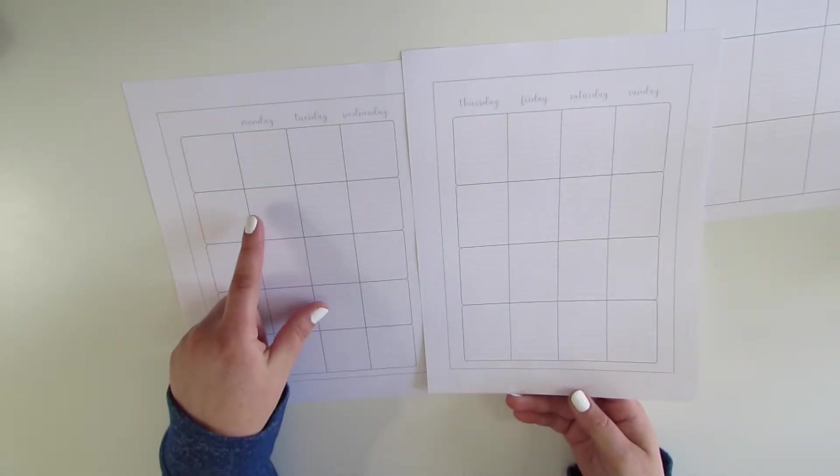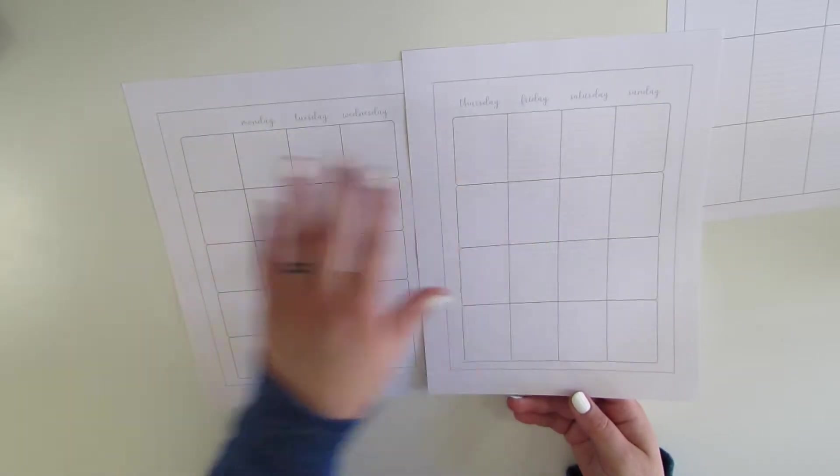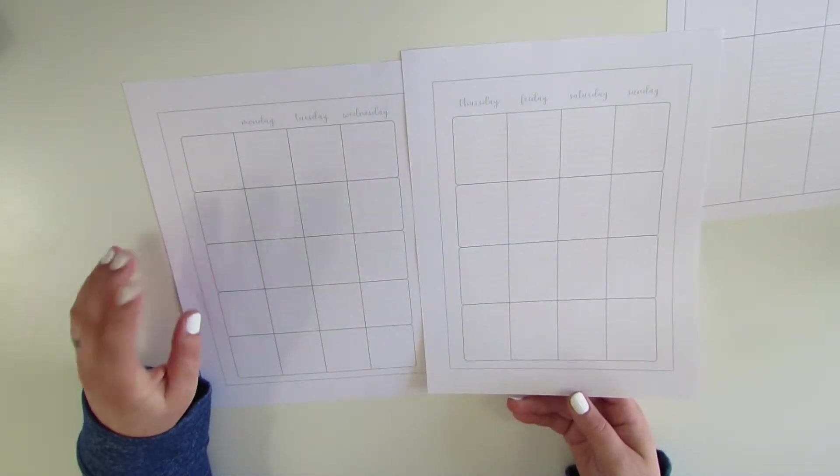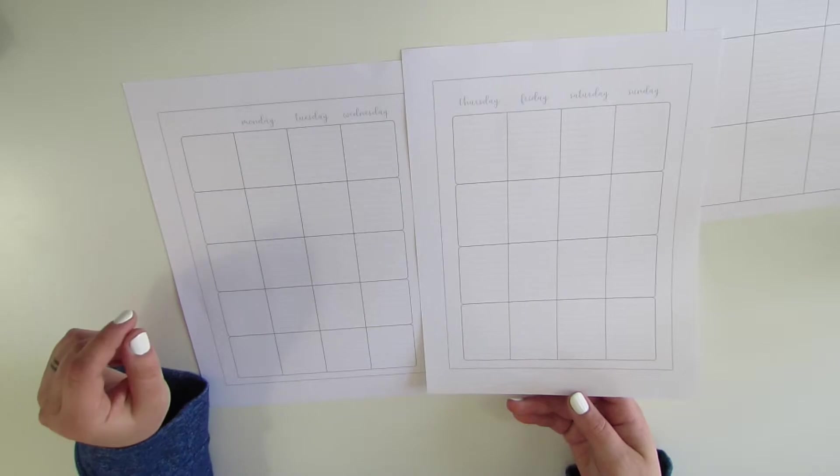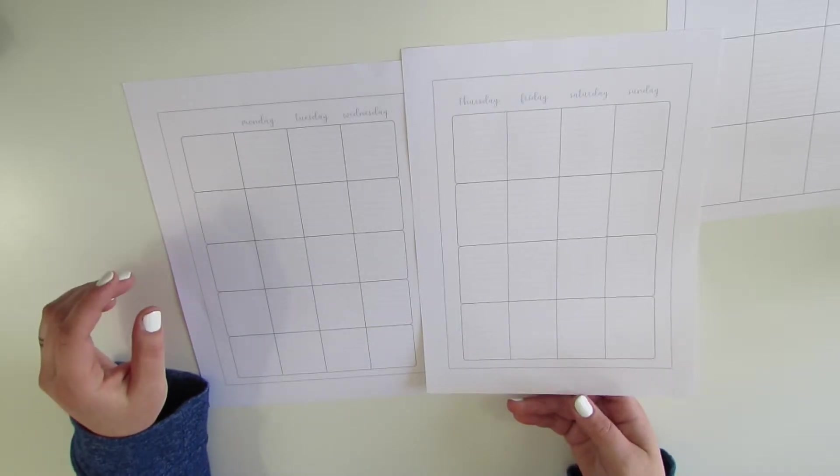So I'm finding that people tend to flip them and have the days of the week up top, and then they can use this for planning social media or pretty much anything.